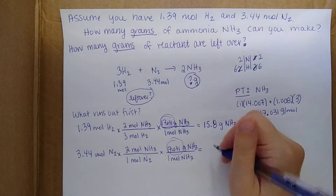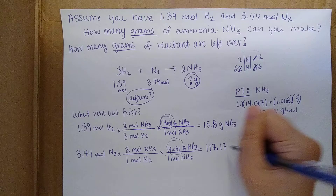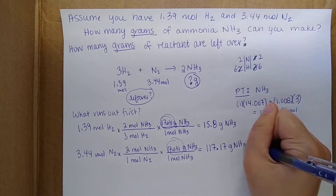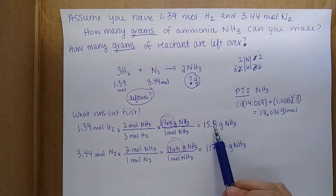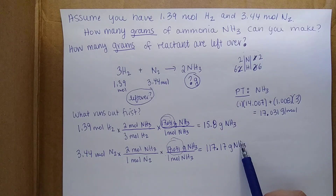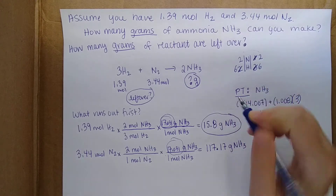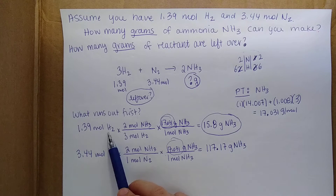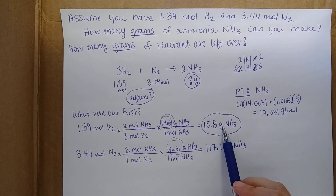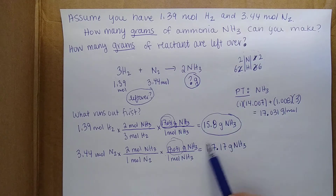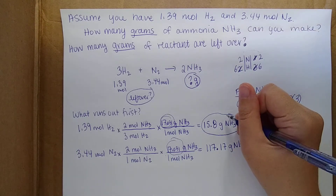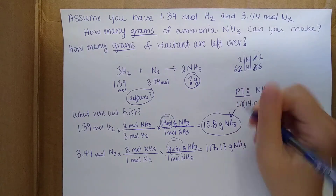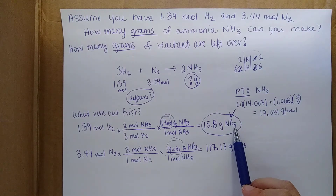Now we ask ourselves: what is our limiting reactant — which one runs out first? The answer is always the one that gives the smaller amount of product. With 1.39 moles of H2, we can only form 15.8 grams of NH3. We had much more with nitrogen, but we're going to run out of H2 first. So 15.8 grams is how many grams of ammonia we're going to be able to make.